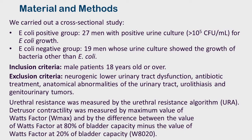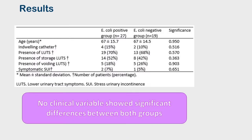Urethral resistance was measured by the urethral resistance algorithm. Detrusor contractility was measured by the maximum value of watts factor and by the difference between the value of watts factor at 80% of bladder capacity minus the value of watts factor at 20% of bladder capacity. Clinical variables studied were age, use of an indwelling catheter, and the presence of storage and/or voiding lower urinary tract symptoms or symptomatic stress urinary incontinence.